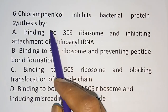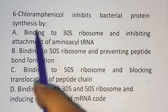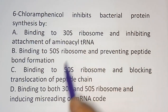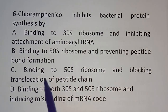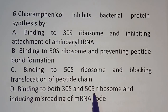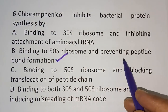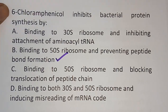Sixth question: chloramphenicol inhibits bacterial protein synthesis by which mechanism? Option A: binds to 30S ribosome and inhibits attachment of amino acyl tRNA. Option B: binds to 50S ribosome and prevents peptide bond formation. Option C: binds to 50S ribosome and blocks translocation of the peptide chain. Option D: binds to both 30S and 50S ribosome and induces misreading of mRNA. The correct answer is option B — chloramphenicol binds to the 50S ribosome and prevents peptide bond formation.